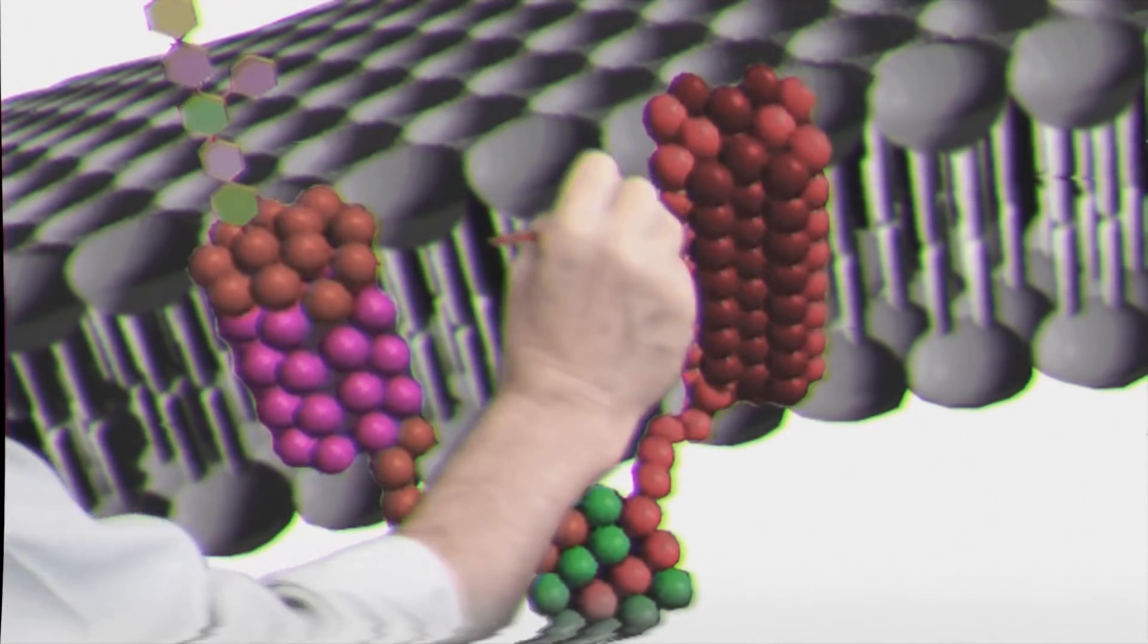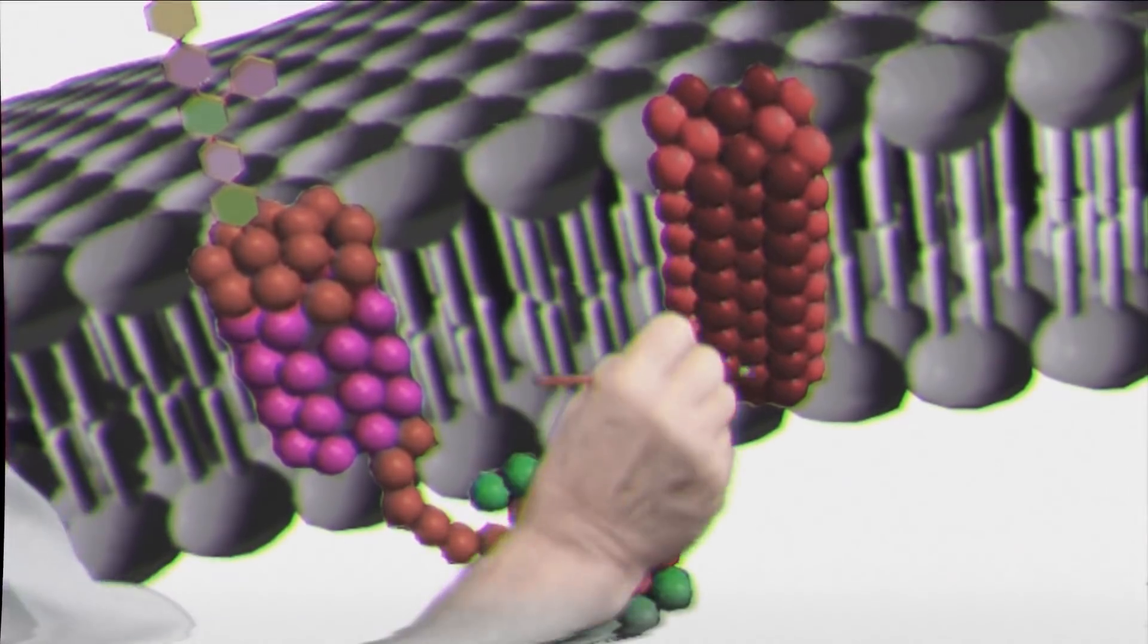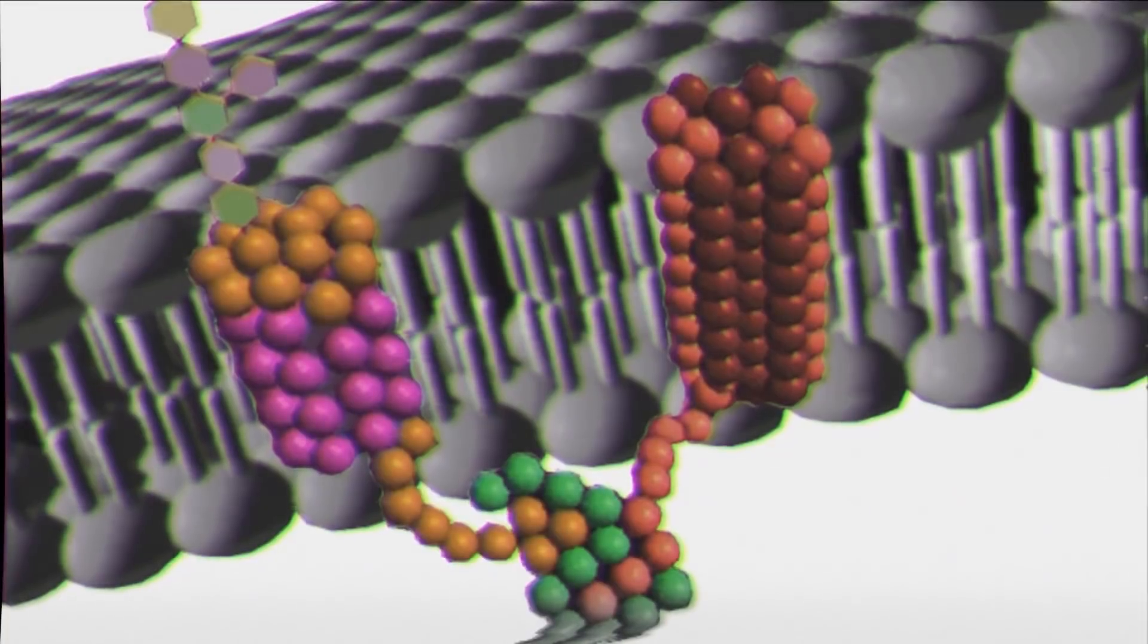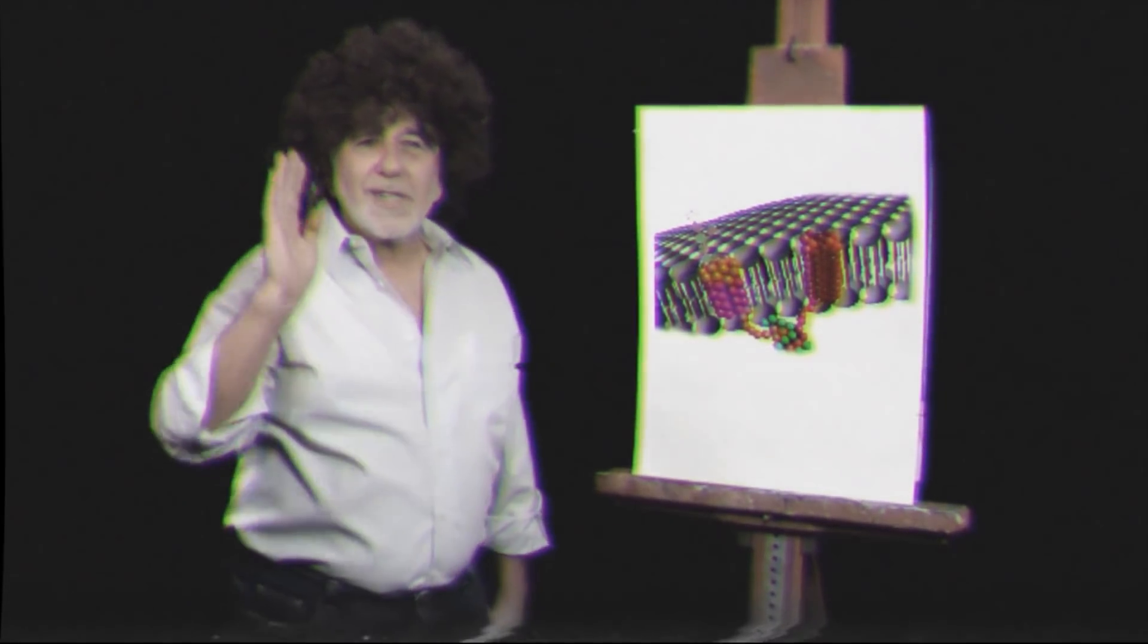But in addition to the receptor, here's a second molecule. It's called a channel. Normally it's closed. But when the receptor receives a signal, the channel opens up and makes a pore in the membrane. That signal information can come from the outside and go into the cell.